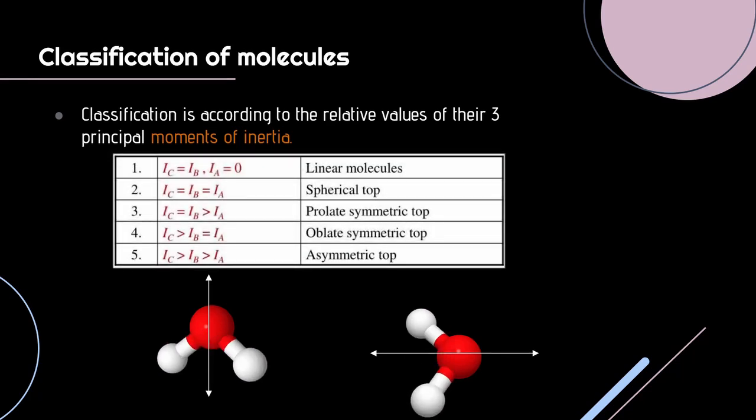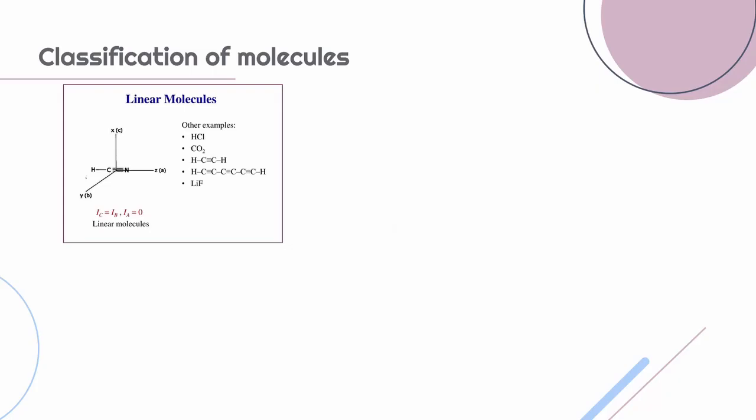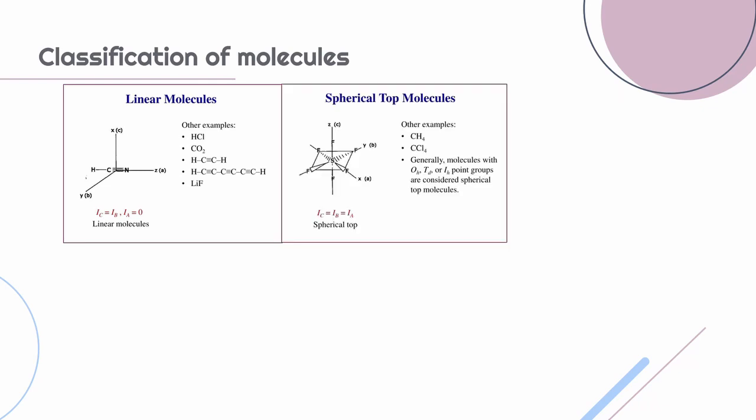The classifications are linear molecules, spherical top, prolate symmetric top, oblate symmetric top and asymmetric top. Linear molecules like HCl has two of its moments of inertia equal and the third one equals zero. Spherical top molecules like methane has all three of its moments of inertia equal.